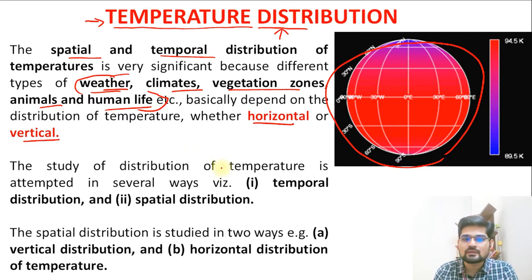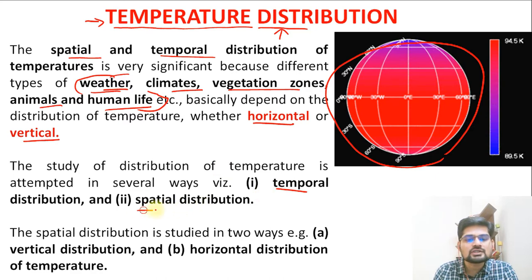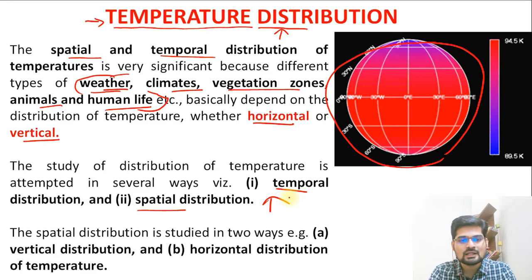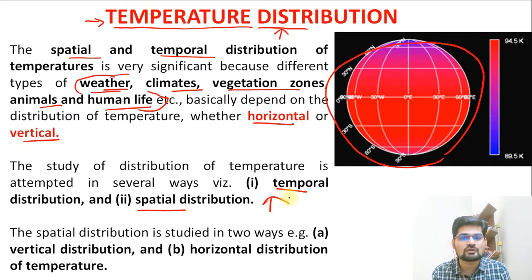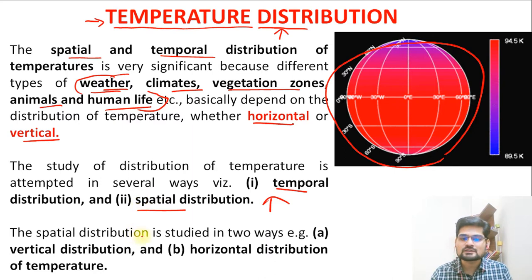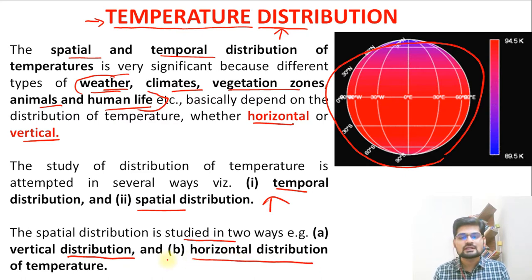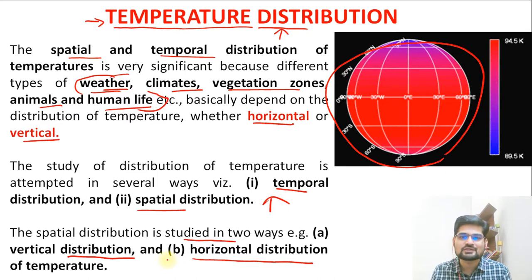The study of temperature distribution has been attempted in various ways. Temporal and spatial are the two major ways in which we discuss temperature distribution. In geography, we are more concerned about the spatial distribution of this phenomenon across latitudes and longitudes on the earth. Spatial distribution studies are divided into vertical distribution and horizontal distribution. Let's first discuss horizontal distribution of temperature in today's session, and in sessions to come we will discuss vertical distribution as well.